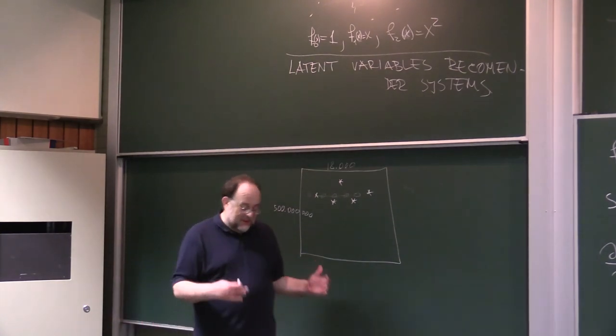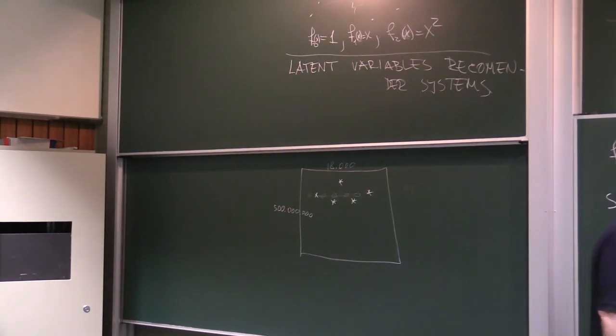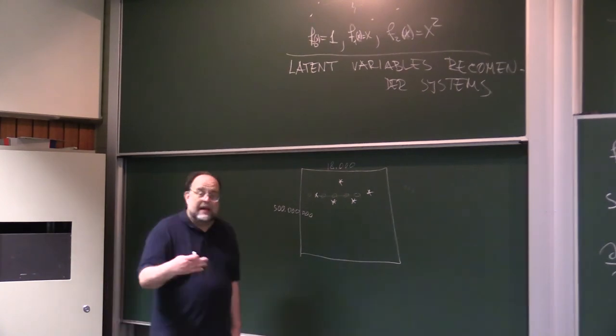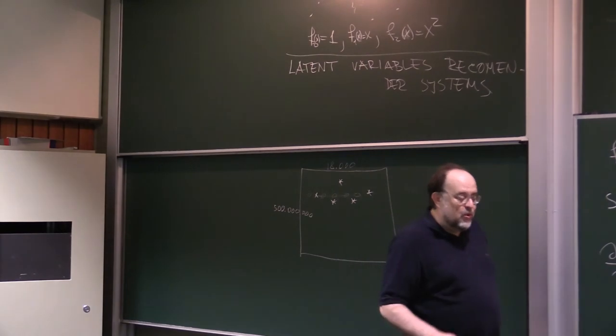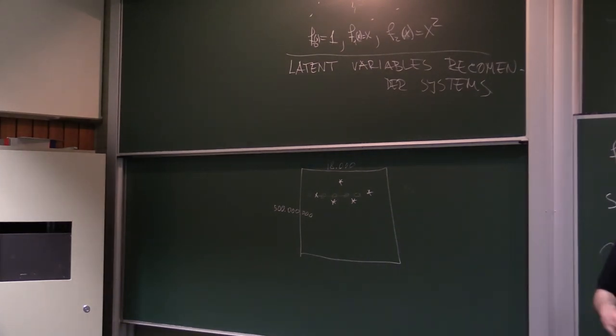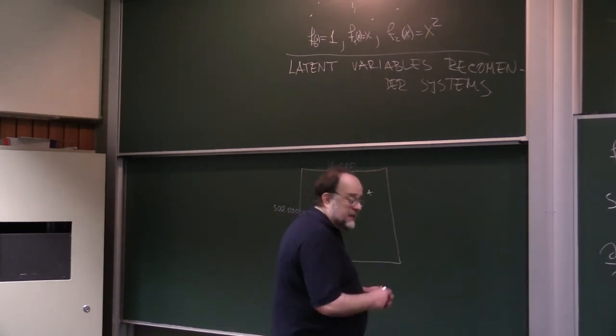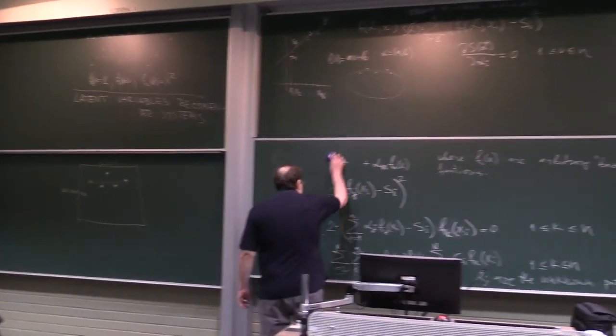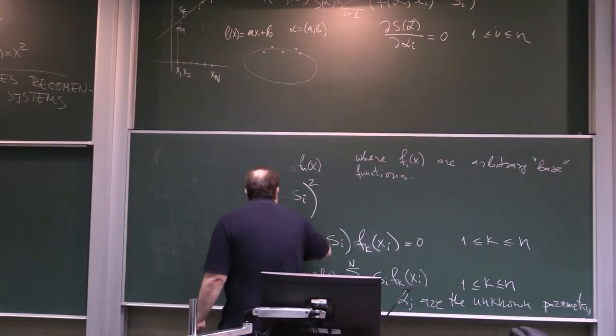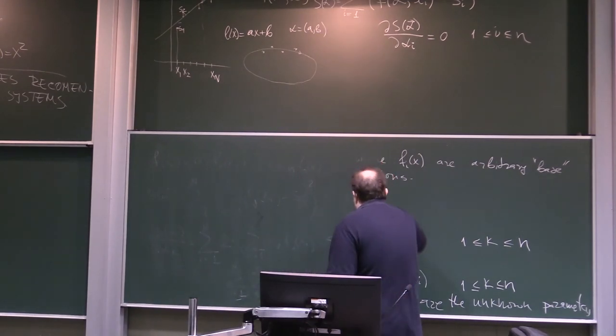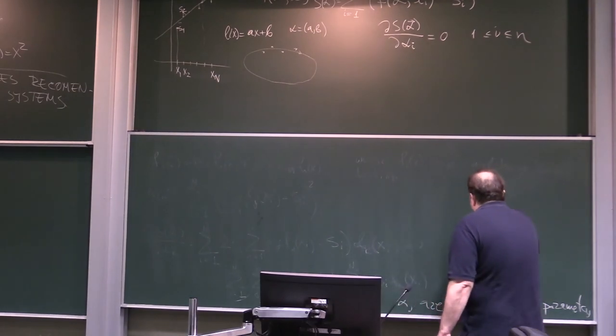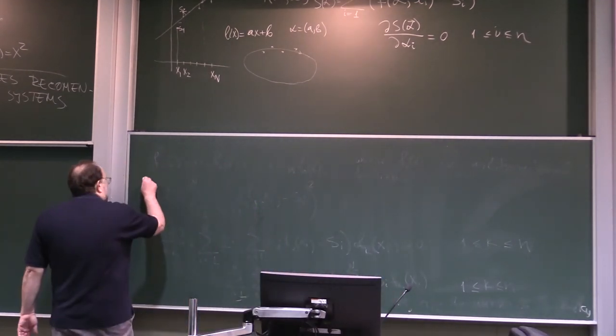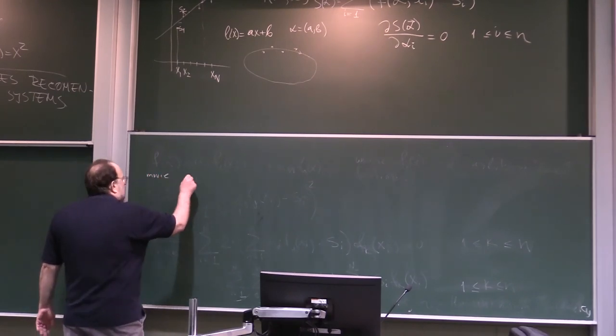So now the logic, the inspiration for the method is actually quite intuitive. You see, one can argue that whether you like a movie or not is reducible to relatively few parameters. For example, what are the features of a movie? Well, for example it would be the genre. And usually not all the movies are in a single genre, so to speak, but they kind of have different components.